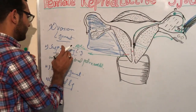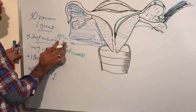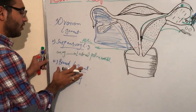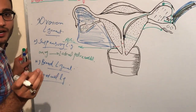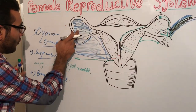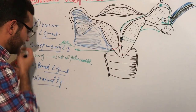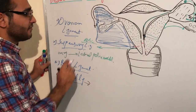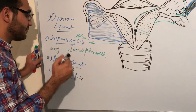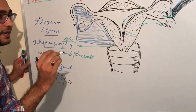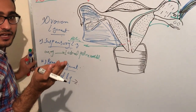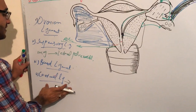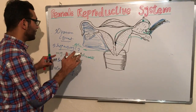The function of the ovarian ligament is to attach the ovary to the lateral wall of the uterus. The broad ligament is the widest ligament, providing protection to the ovary, fallopian tube, and the whole uterus. The cardinal ligament runs from the cervix to the lateral wall of the pelvis and provides the uterine artery and blood vessels to the uterus. That covers all the ligaments of the uterus.